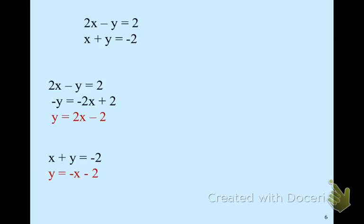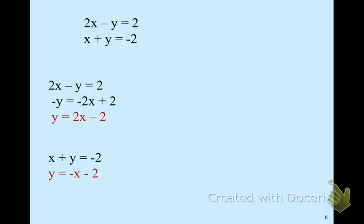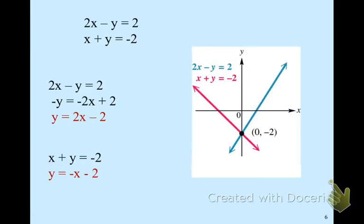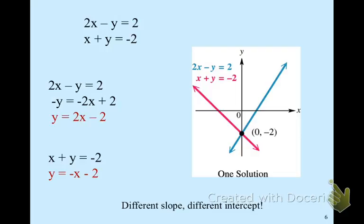Upon inspection of the two equations, we look first at the slope. Slope-intercept form is Y equals MX plus B, so we look at slopes and Y-intercepts. The first equation has a slope of 2 and the second has a slope of negative 1 — they are different. Because the slopes are different, there will be one solution. The Y-intercepts happen to be the same here, which only indicates the point of intersection. You would still need to graph, substitute, or eliminate to determine that the solution is (0, negative 2). When slopes differ, you must find the solution.